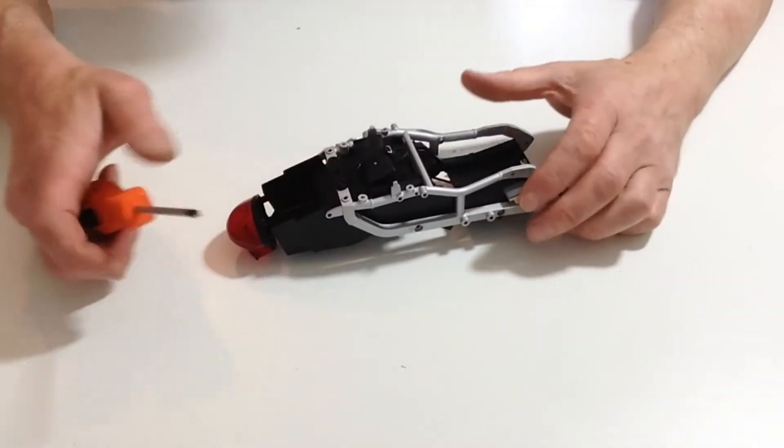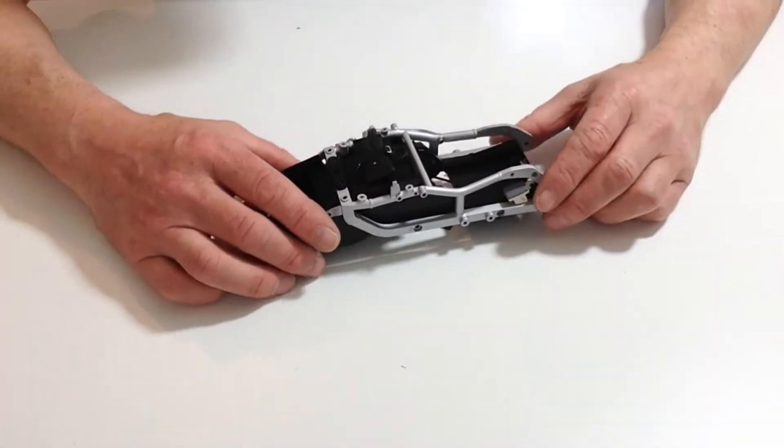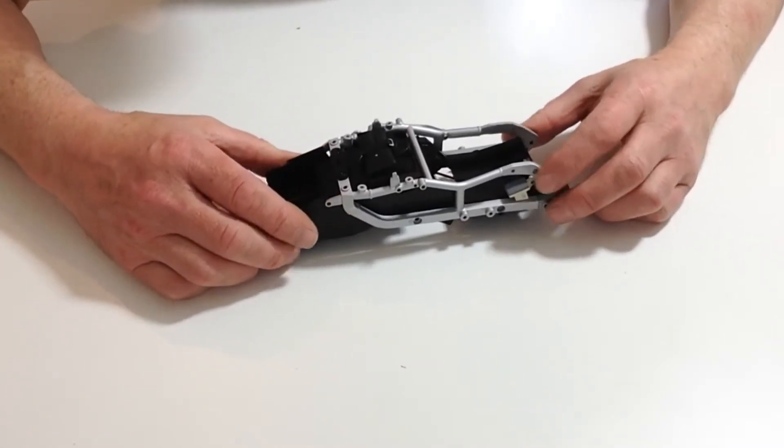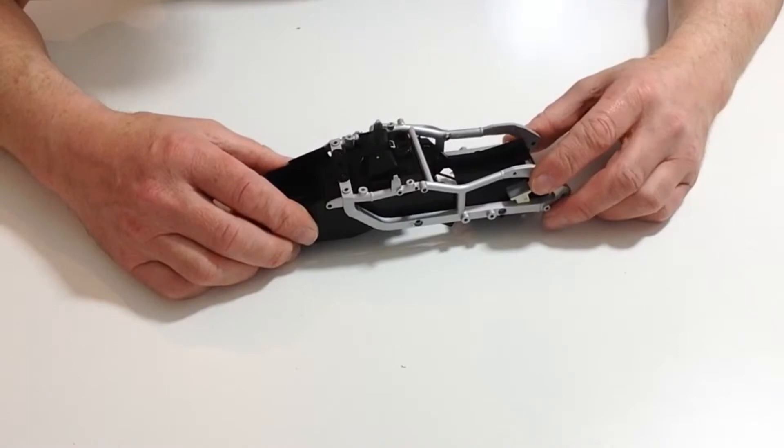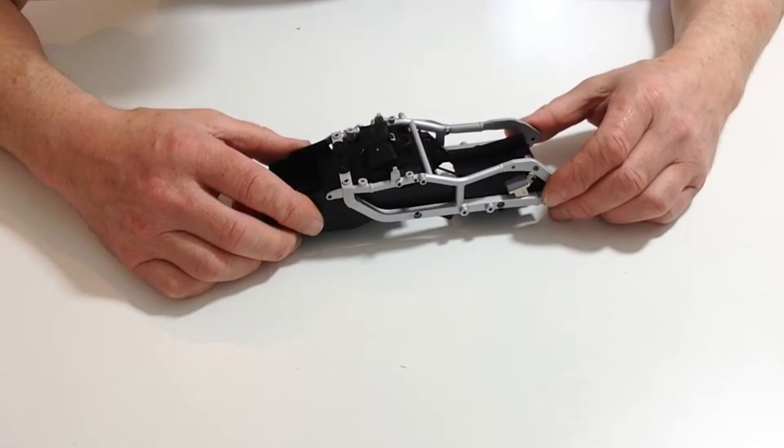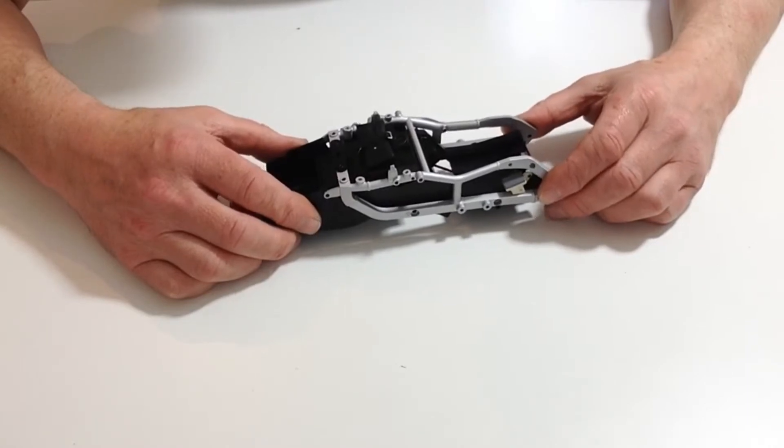Once they are aligned, take the 2.3 by 6mm silver self-tapping screws from stage 44 and screw those into the six aligned holes, three on each side.